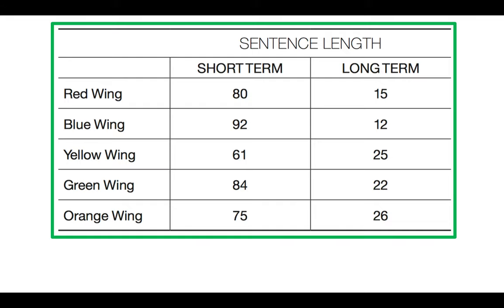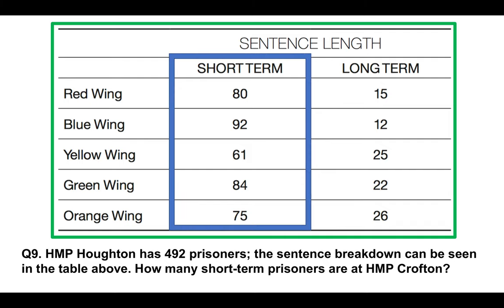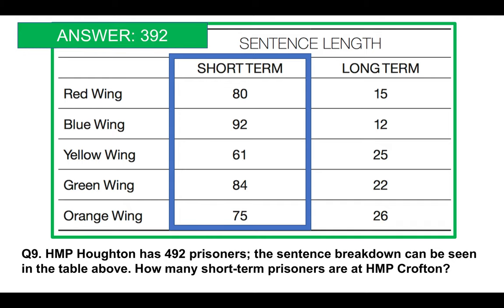This next type of question involves analyzing information in a chart showing sentence length for prisoners at HMP Houghton. There are 492 prisoners in total, and a sentence breakdown is given in the table. Question nine: how many short-term prisoners are there at HMP Houghton? We circle all the short-term entries, add them all up, and the answer is 392.